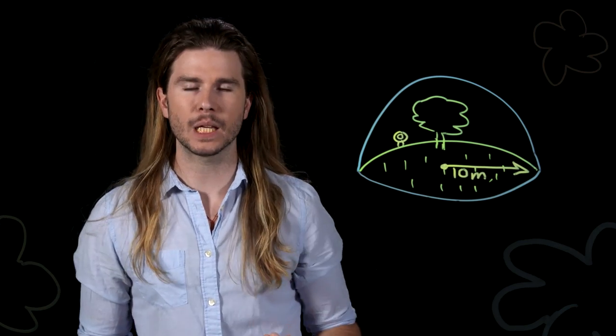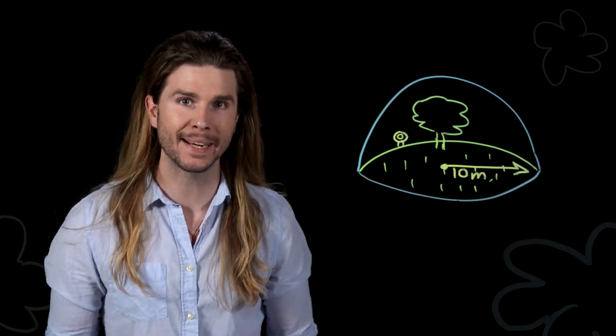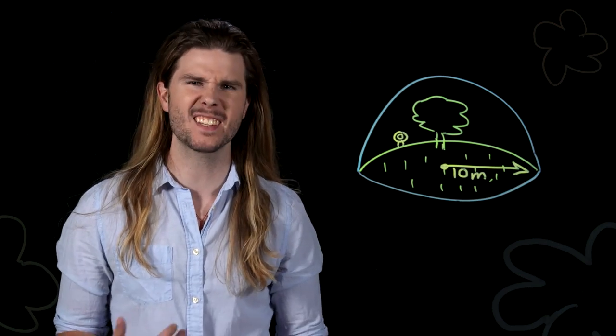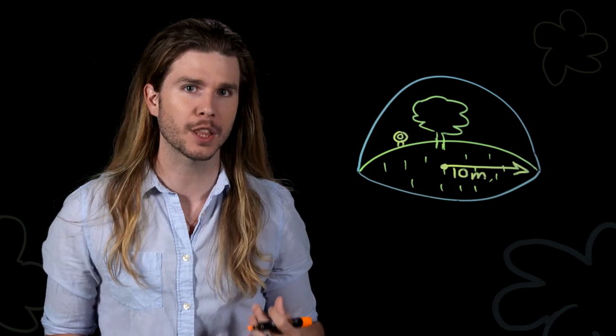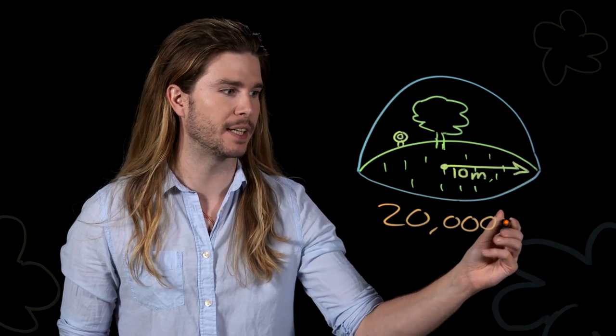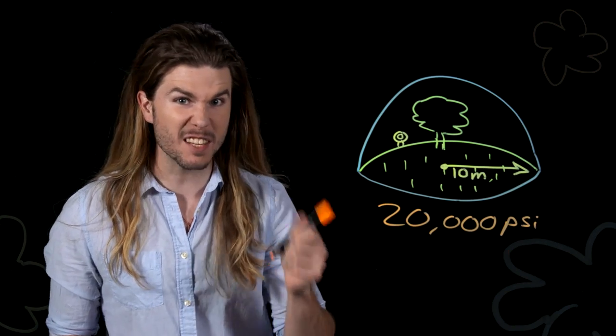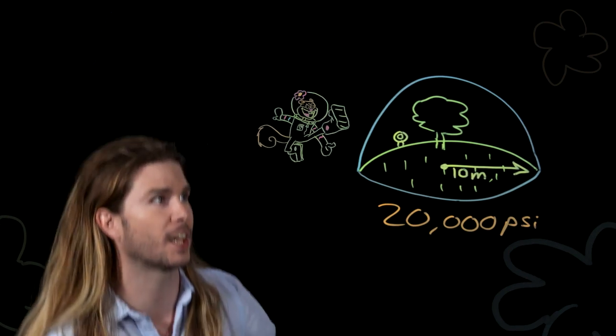But that number doesn't really mean anything if we don't know how much pressure the dome can withstand, which is dependent on the material, which Sandy says isn't glass, but polyurethane. And polyurethane has a compressive strength of 20,000 pounds per square inch. This stuff can certainly make a very strong dome, depending on the thickness.